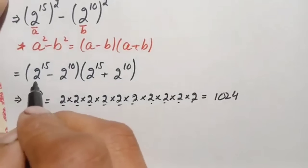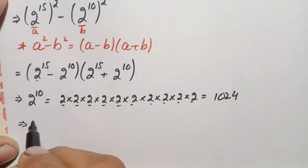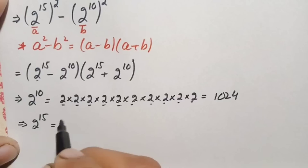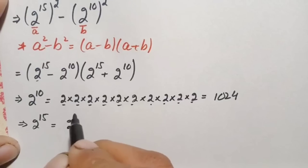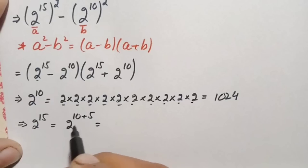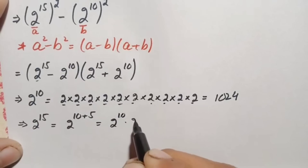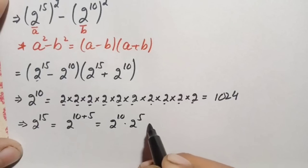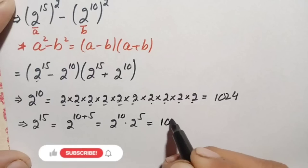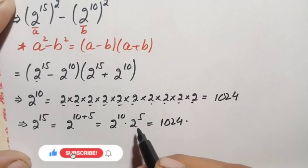Next, we find 2 raised to power 15. We can write 15 as 10 plus 5, so 2 raised to power 15 equals 2 raised to power 10 times 2 raised to power 5. We have 2 raised to power 10 equals 1024, and 2 raised to power 5 is simply 32.